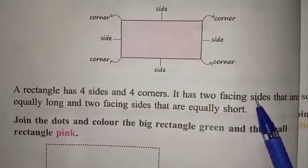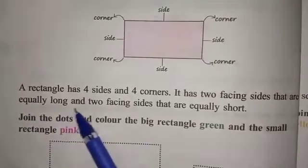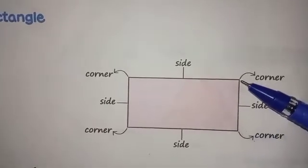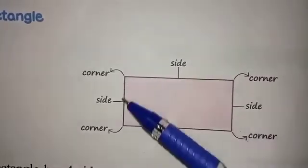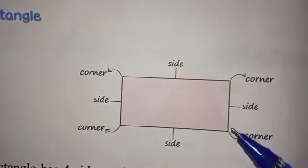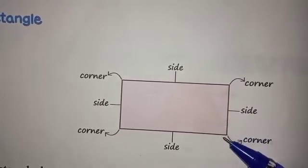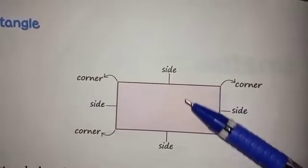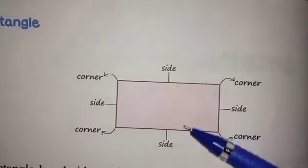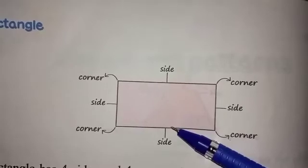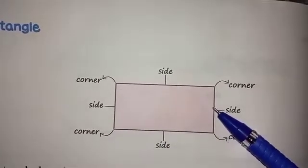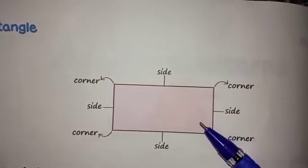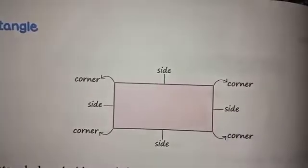It has two facing sides that are equally long and two facing sides that are equally short. Look at this picture. Corner 1, corner 2, corner 3 and corner 4 — so a rectangle has four corners. Side 1, side 2, side 3 and side 4. When you look at this, you can see the opposite sides are equal in length — these two sides are equal in length and these two sides are also equal in length. So a rectangle has four sides, four corners, and its opposite sides are equal in length.